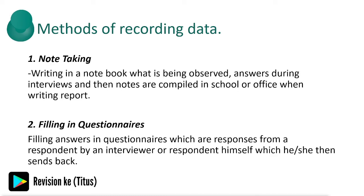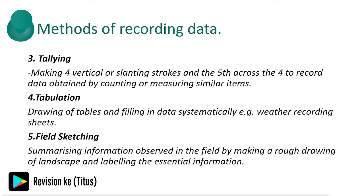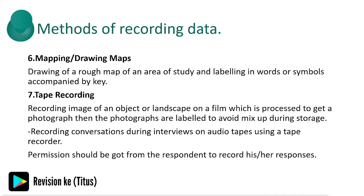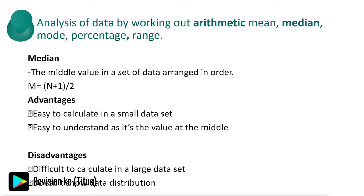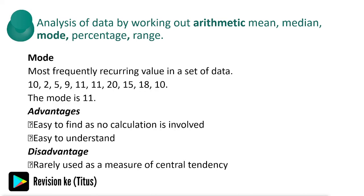Methods of recording data include note-taking, filling in questionnaires, tally, tabulation, field sketching, mapping or drawing maps, and tape recording. Once we've collected and recorded data, we need to analyze it so that it makes sense. We analyze data by working out the arithmetic mean, median, mode, percentage, and range. The mean is the average; the median is the middle value in a set of data arranged in order; and the mode is the most frequently occurring value in a set of data.